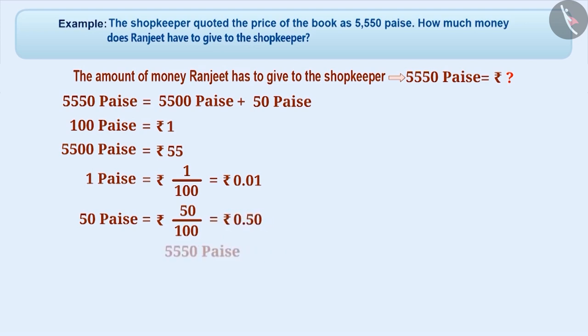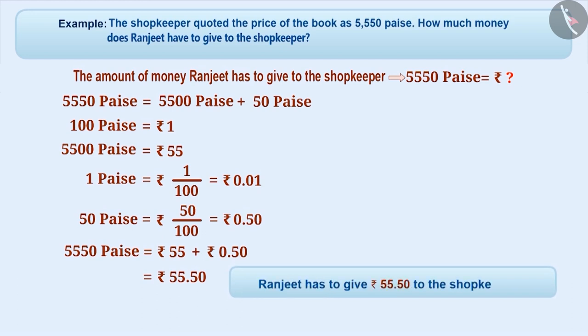Therefore, 5,550 paise equals 55 plus 0.50, that is 55.50, so Ranjit should give 55.50 to the shopkeeper.